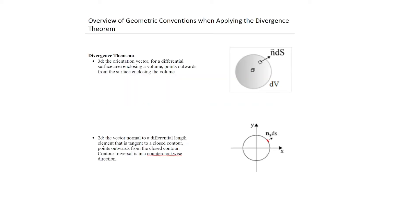Let's start with an overview of geometric conventions when applying the Divergence Theorem—there will be a 3D version and a 2D version, the 2D version being Green's Flux Theorem, which we'll get into more detail a little later. For the Divergence Theorem, we're always looking at a closed surface. The picture on your right shows basically a sphere, but it's a continuous smooth surface so we can identify a vector normal to that surface—a differential area vector N dS—and that encloses the volume.